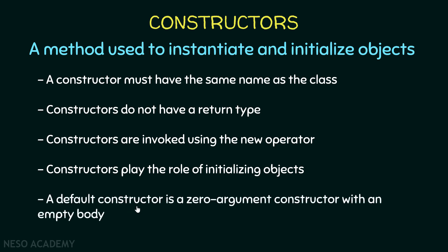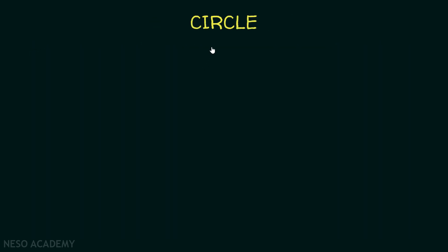We use constructors to initialize objects — to give initial values to the attributes of our object. A default constructor is a zero-argument constructor with an empty body, meaning it doesn't take any parameters and doesn't do anything. We simply use it to create an object from the class.